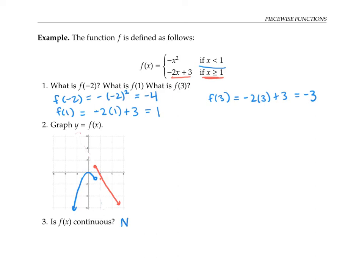So this function is not continuous. It's got a discontinuity when x is one, which is exactly the border point between the two rules. Often piecewise functions will have discontinuities where they transition from one rule to the next.